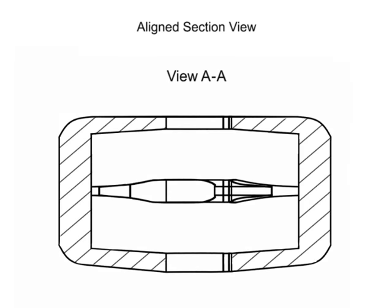As with all section views to avoid confusion, ribs, webs, and other thin parts such as the spokes on a wheel are not shown with section lines.